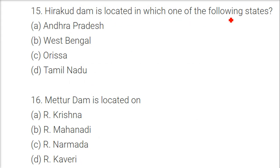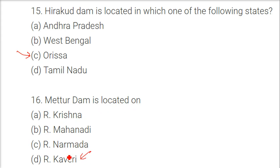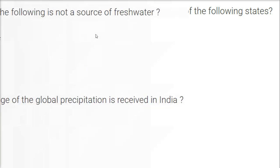Hirakud Dam is located in which state? The answer is Odisha. Mettur Dam is located on which river? The answer is River Kaveri.